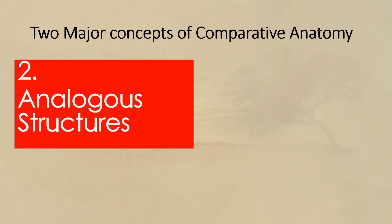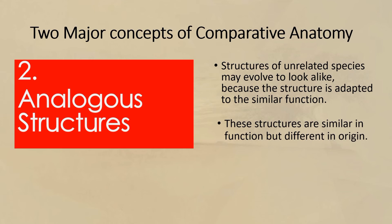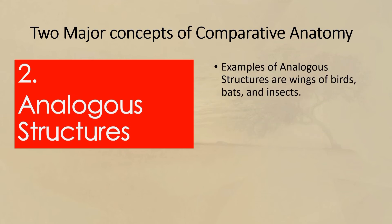The second concept of comparative anatomy is analogous structures. Structures of unrelated species may evolve to look alike because the structure is adapted to a similar function. These structures are similar in function but different in origin. Examples of analogous structures are the wings of birds, bats, and insects.